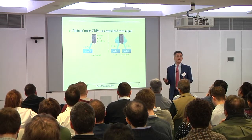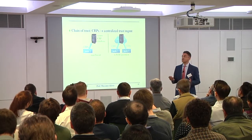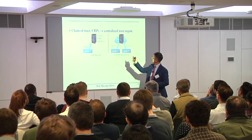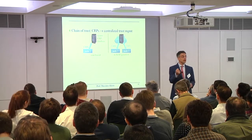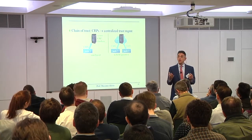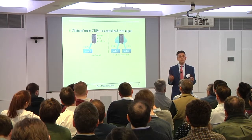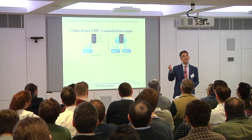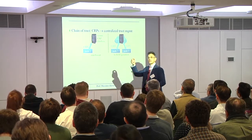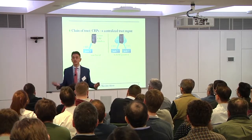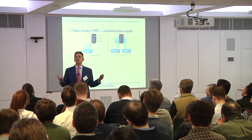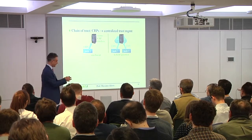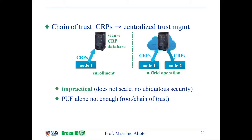There is a second reason why challenge-response pair schemes shouldn't be used in IoT systems: if you use CRPs, you need a centralized trust management system. Every time you have a transaction, somebody has to check whether the response is correct, and that response is stored only in the secure database. So the secure database is always between any transaction in a large network — this doesn't scale. It's impractical, meaning PUFs alone are not really a good solution. They need something else.